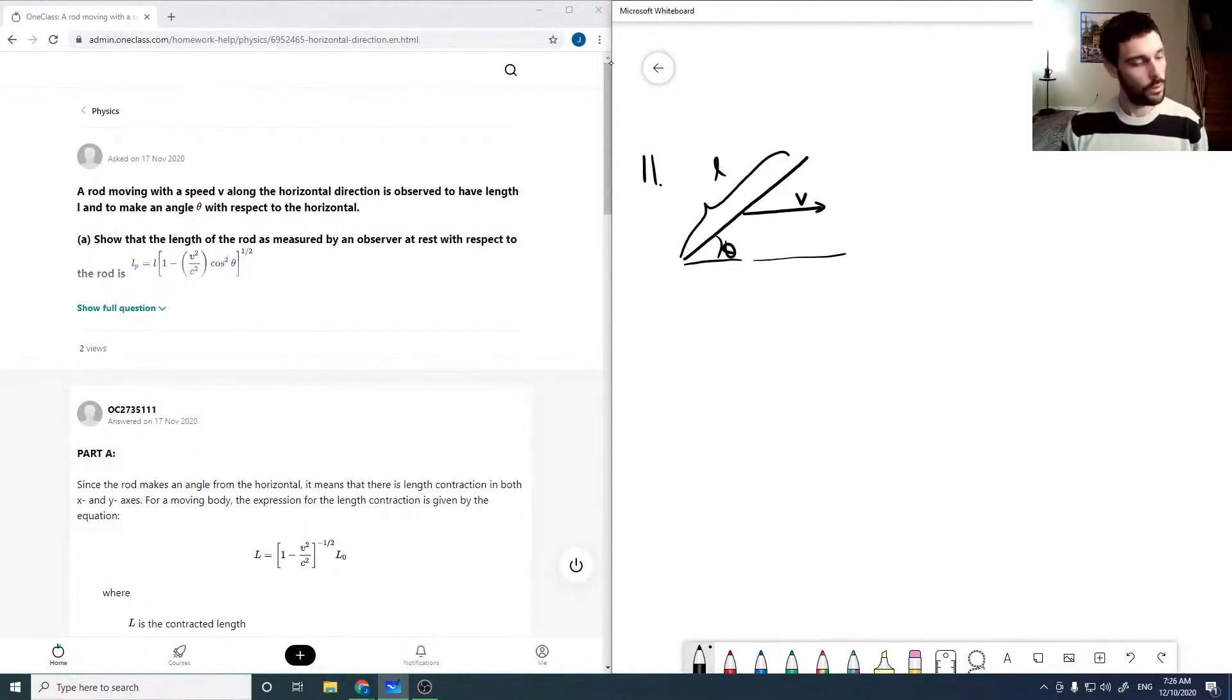So we're going to use our, and we're going to show that the rod, as observed by an observer, is compressed. So we're going to use our special relativity equation, which has this form.